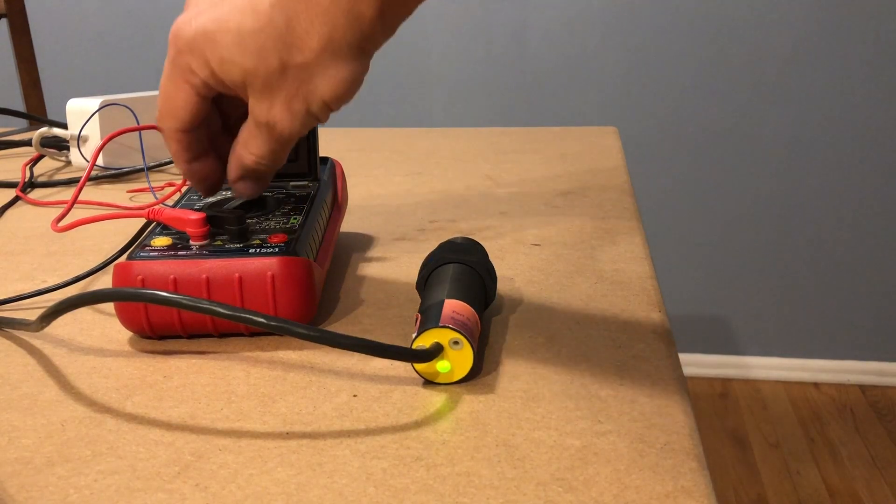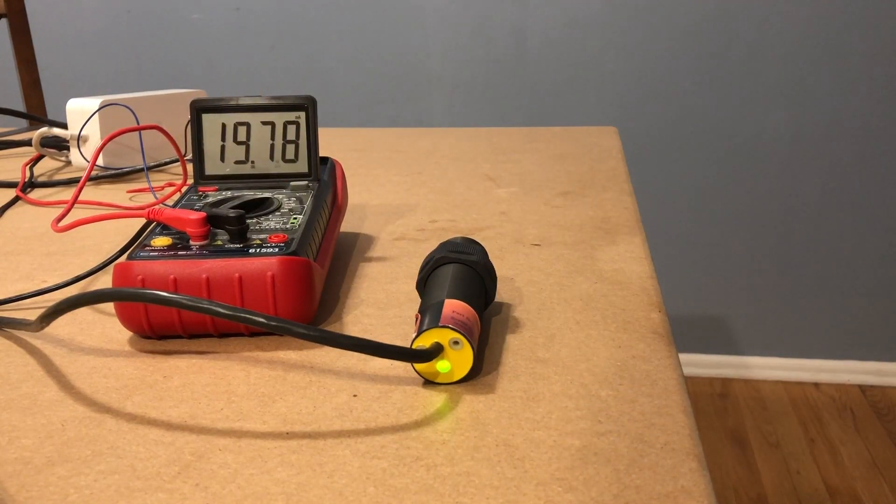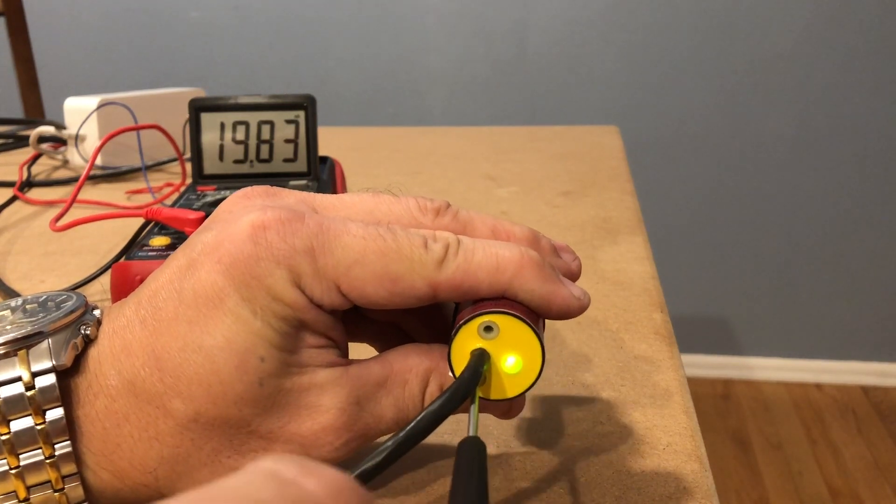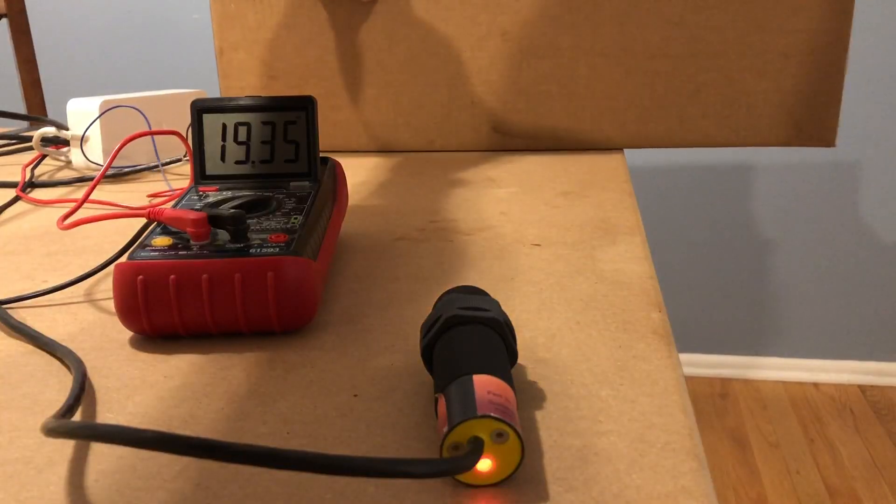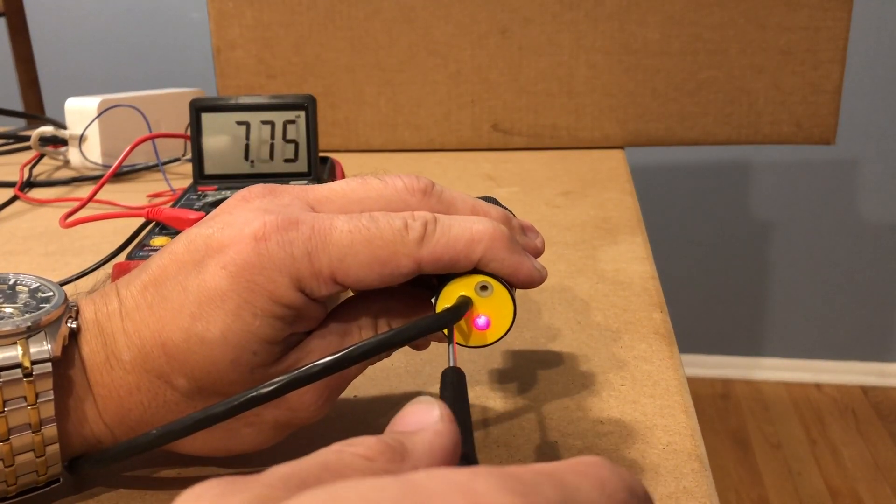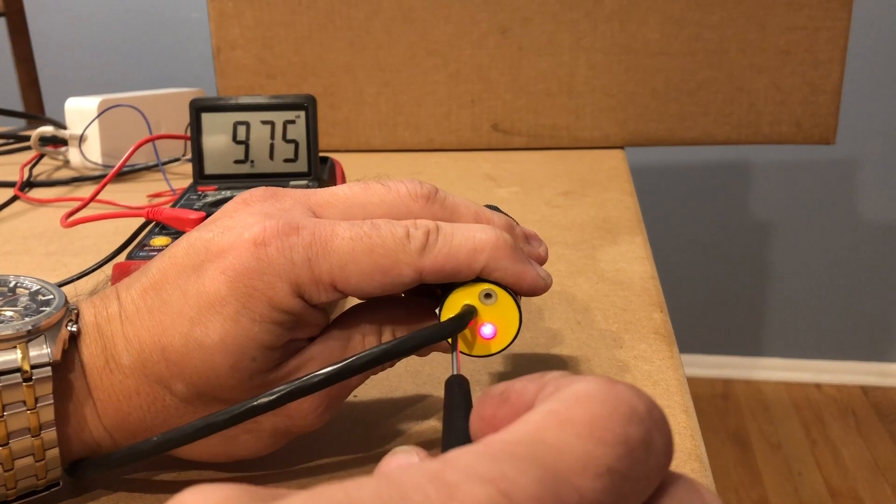The sensor has two potentiometers built-in. These are called span adjustment. After playing with them for a little bit I found that one controls the far end distance and the other one is for the close end.